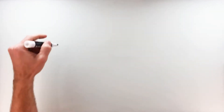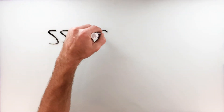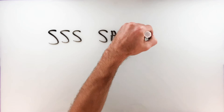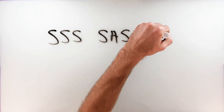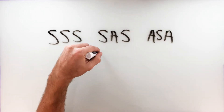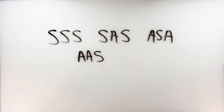Hello and welcome to the Geomestic channel. While exploring triangle congruence postulates like side-side-side, side-angle-side, angle-side-angle, and angle-angle-side, you probably noticed a glaring exclusion of an angle-side-side option to prove two triangles congruent.